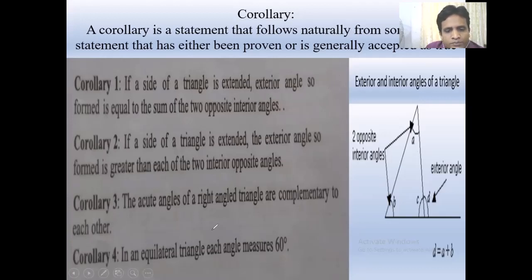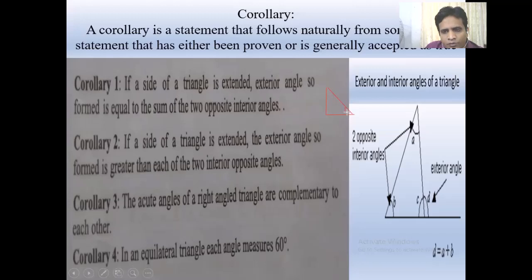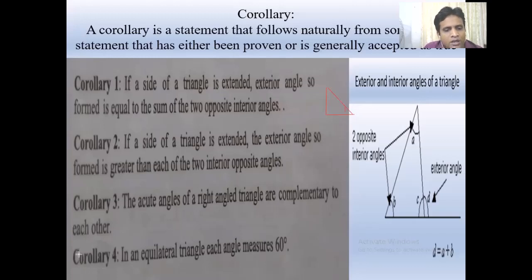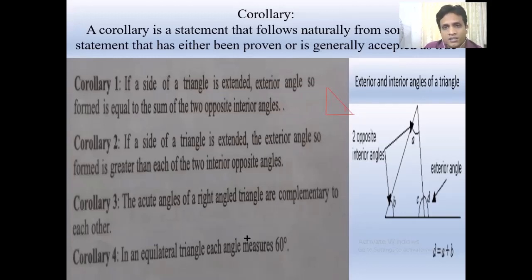If you draw a right angle triangle, suppose one angle is 90 degrees. The other two acute angles are complementary to each other — they always add up to 90 degrees. For corollary 4: in an equilateral triangle, each angle measures 60 degrees. An equilateral triangle has three equal sides, so each angle always measures 60 degrees.